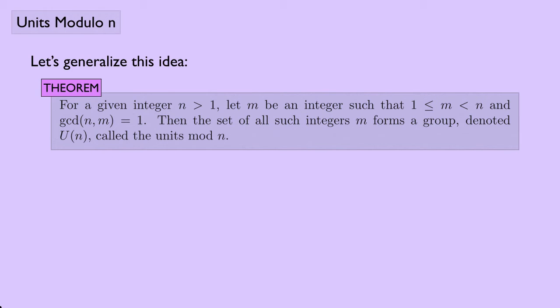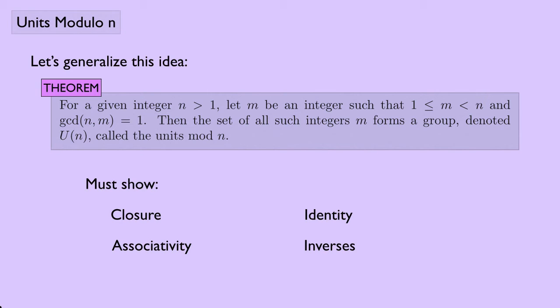Let's generalize this idea into a theorem. For a given integer n > 1, let m be an integer such that 1 ≤ m < n and the greatest common divisor of n and m equals 1 — in other words, they are relatively prime. Then the set of all such integers m forms a group, denoted U(n), called the units modulo n.